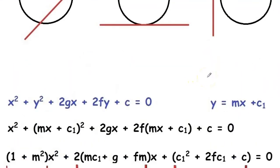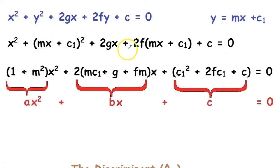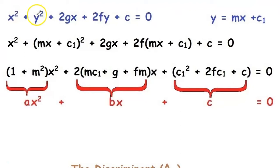So let's take a general circle x² + y² + 2gx + 2fy + c = 0, and a line y = mx + c₁, where m is the gradient of this straight line. The first step is to substitute y from the line equation into the circle equation.